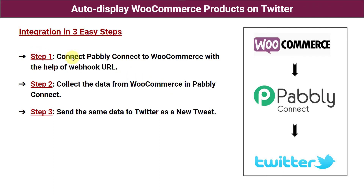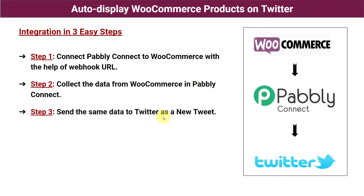Step one is: connect Pabbly Connect to WooCommerce with the help of a webhook URL. First of all we are going to open Pabbly Connect and connect our WooCommerce store with Pabbly Connect. Step two is: collect the data from WooCommerce in Pabbly Connect — we will bring the data of the products from WooCommerce store into Pabbly Connect. And step three says: send the same data to Twitter as a new tweet.